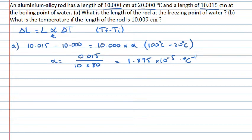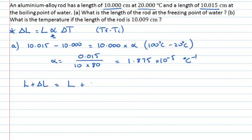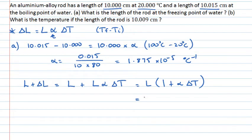Now that we know how this material behaves for any change in temperature, we can look at what the length of the rod is going to be at the freezing point of water. The length of the rod will equal the original length plus how much the length changes by: L plus delta L. Substituting for delta L, it's my original length multiplied by (1 plus alpha times delta T). Taking 10.000 centimetres at 20 degrees Celsius as our original length.